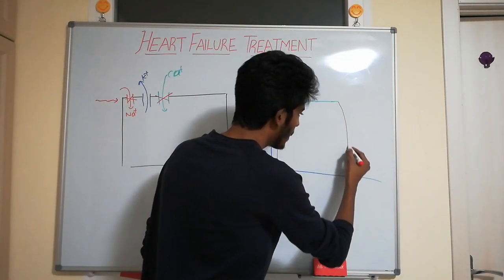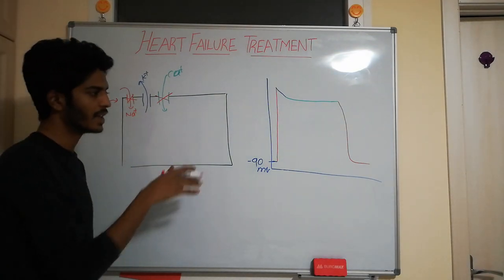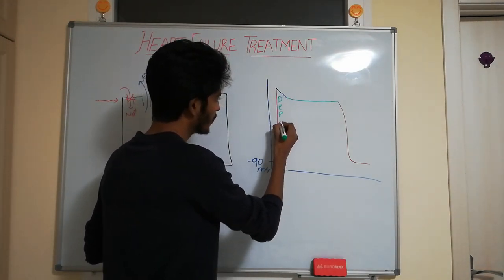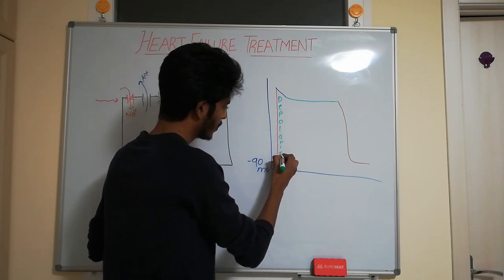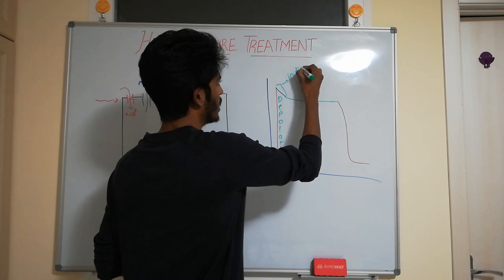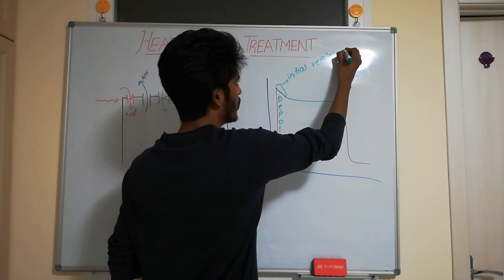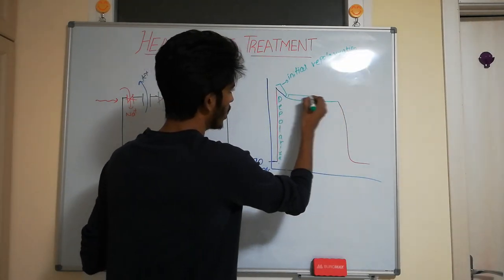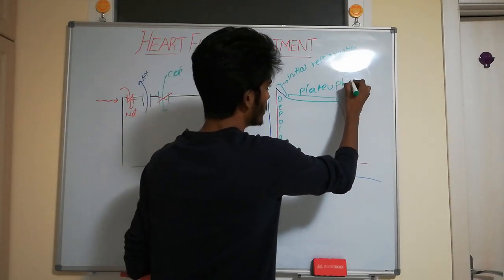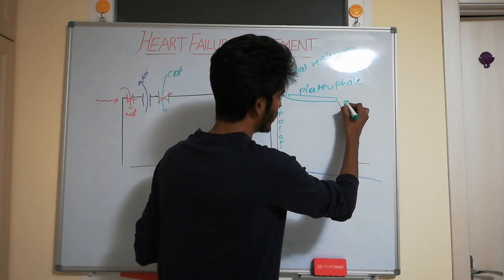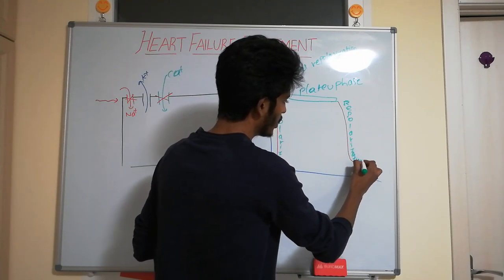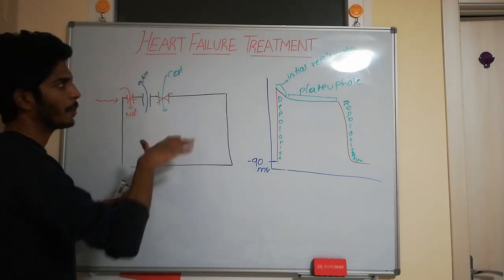After the voltage-gated calcium channels shut down, potassium channels are still open, and potassium continues to go out, leading to a fall in the voltage within the cell. The initial rise is called depolarization, the early fall is initial repolarization, the flat region is the plateau phase, and the final descent is repolarization. This is how action potential happens in cardiac muscle.